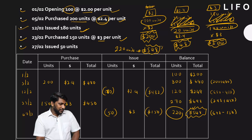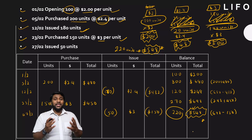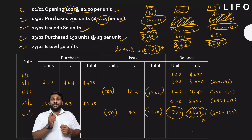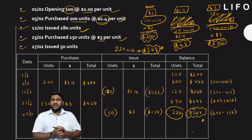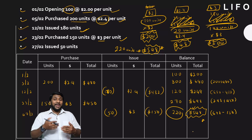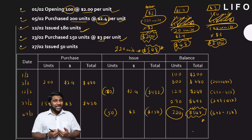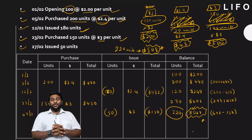Both answers are $548 — the store ledger method and the shortcut method give the same result. In the LIFO method, always ask: what is the material that I received last? That material is what you issue first. Note that the shortcut method is useful for MCQ-type questions; if you have a full question requiring workings, you must use the store ledger.